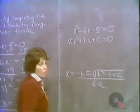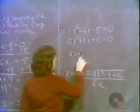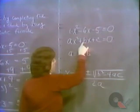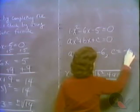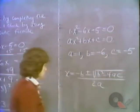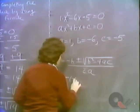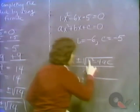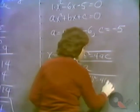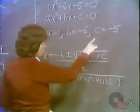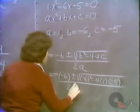First, figure out and write down a, b, and c. Here a is the coefficient of x squared, so a equals 1. b is the coefficient of x, so b equals minus 6 — you include the sign. c is the constant term, so c equals minus 5. Substituting: x equals minus of minus 6, plus or minus the square root of minus 6 squared minus 4 times 1 times minus 5, all over 2 times 1.